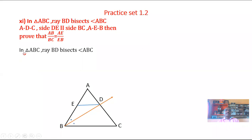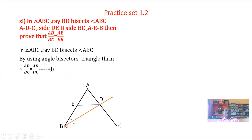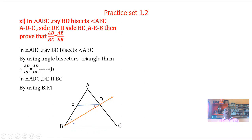Similarly, since DE is parallel to BC in triangle ABC, by the Basic Proportionality Theorem, AE over EB is equal to AD over DC. This gives equation number 2. From equations 1 and 2, the ratio AD over DC is the same in both, therefore AB over BC is equal to AE over EB.